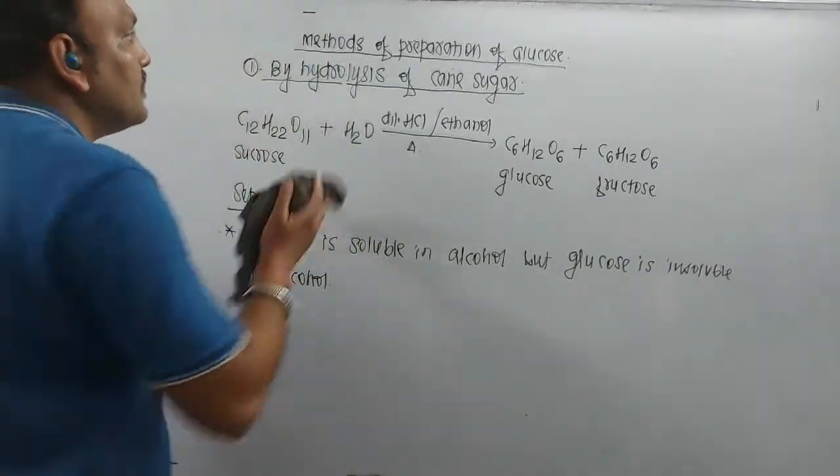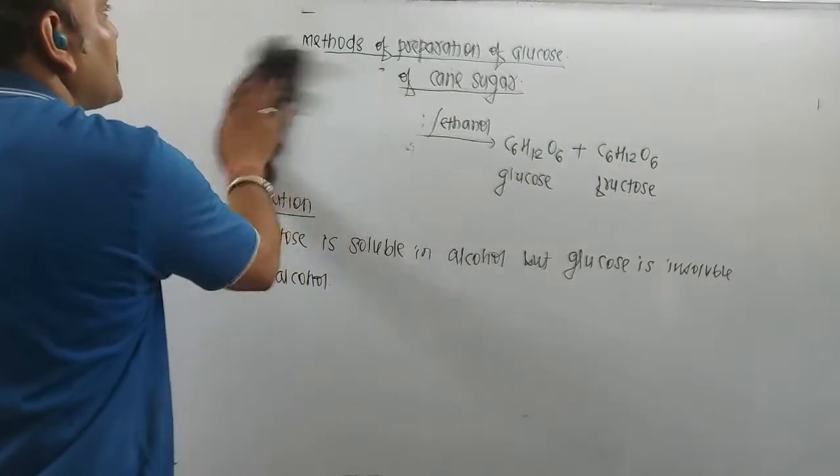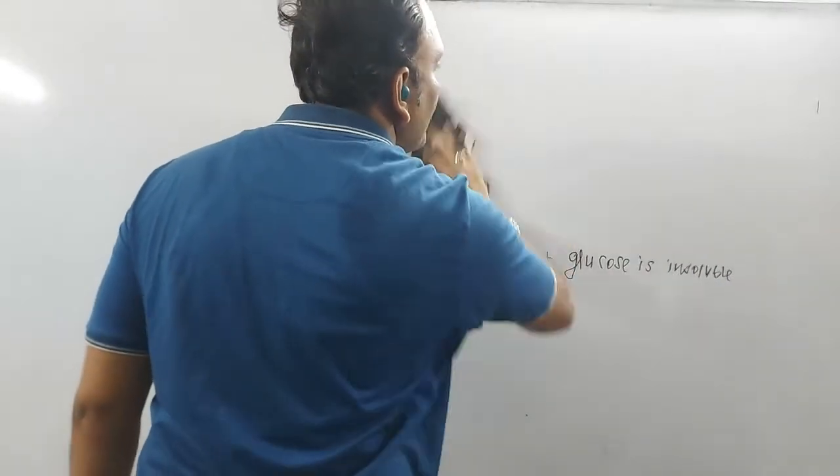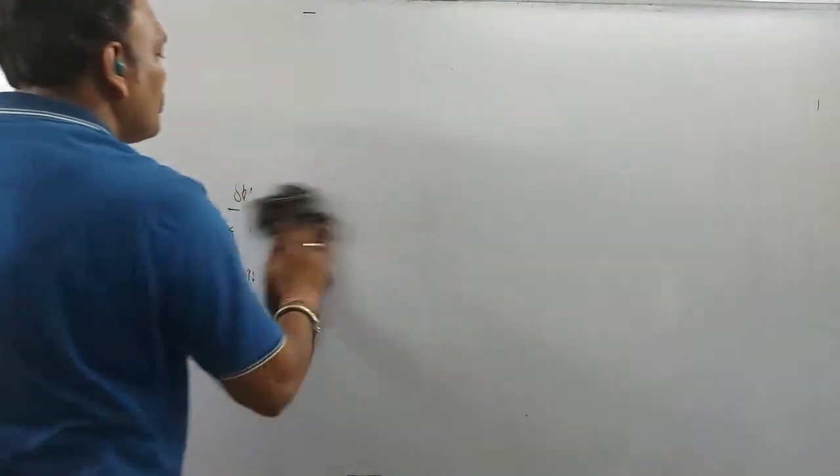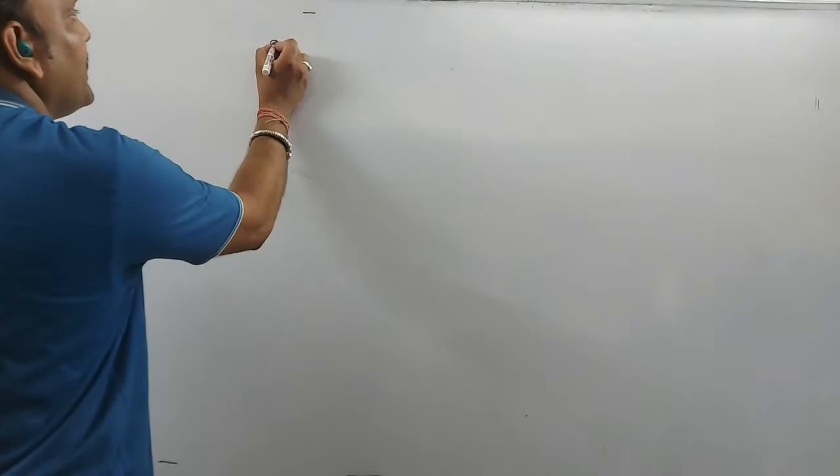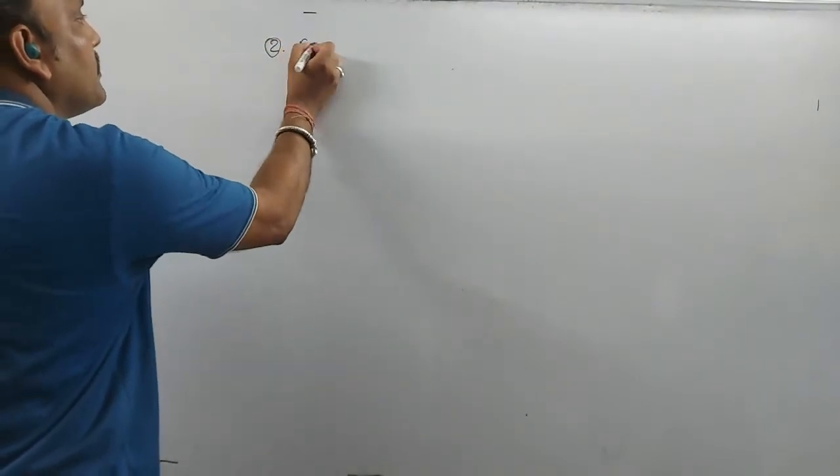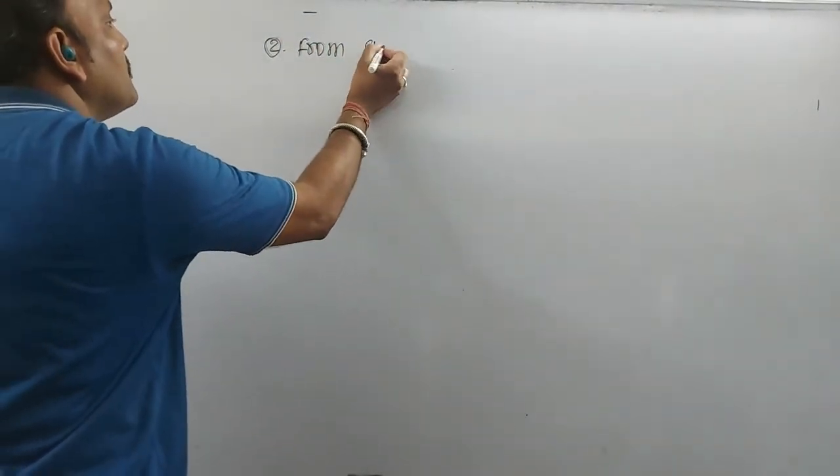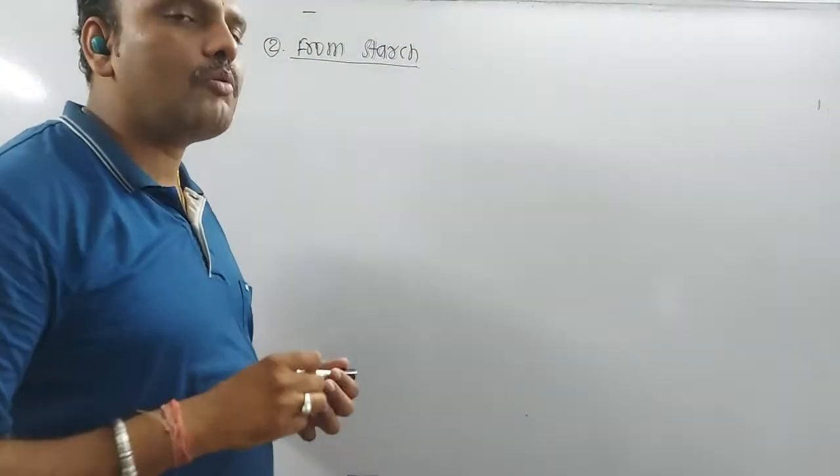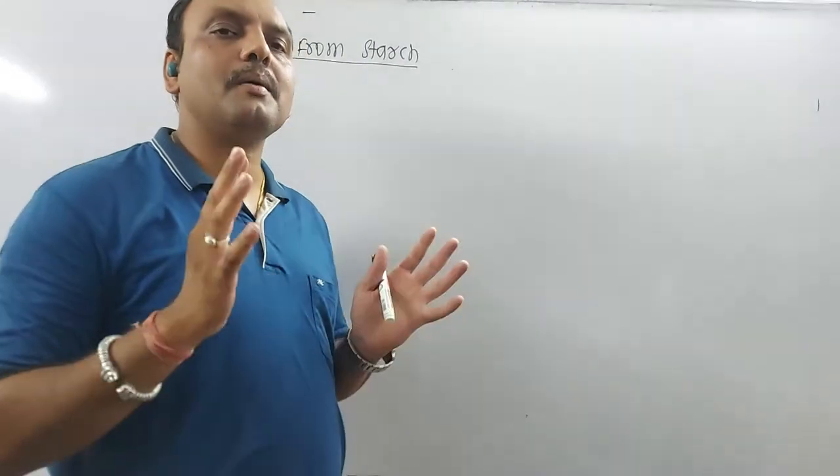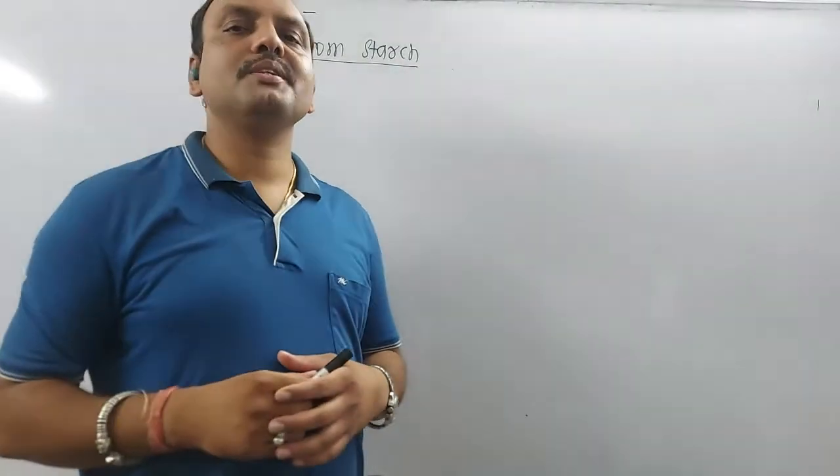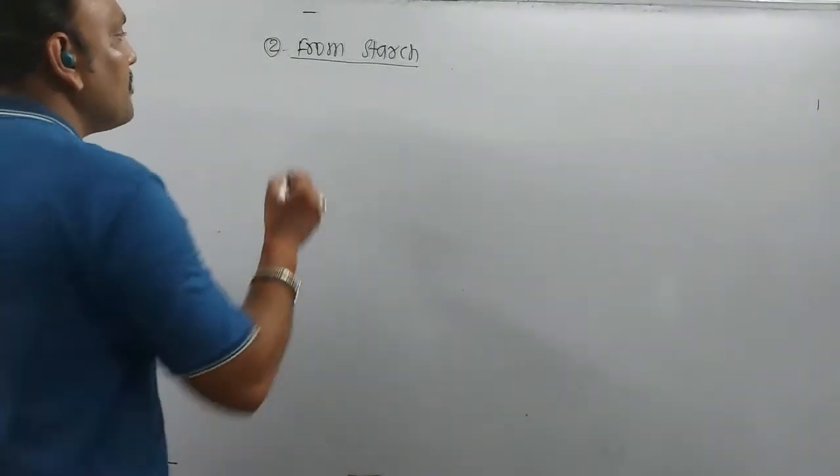But remember, this is a laboratory method. But if at all you are willing to prepare glucose in large scale, I mean in commercial manner, then that can be done by hydrolyzing the starch. Remember, second and very important method is from starch. So remember, when starch is hydrolyzed, we all know very well that starch is a polysaccharide, and polysaccharides upon hydrolysis give large number of monosaccharide molecules.